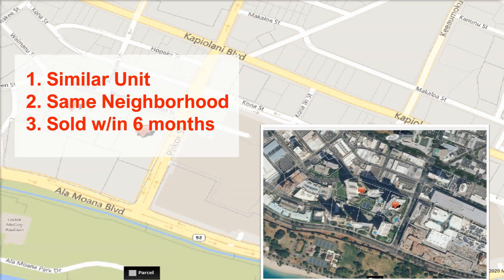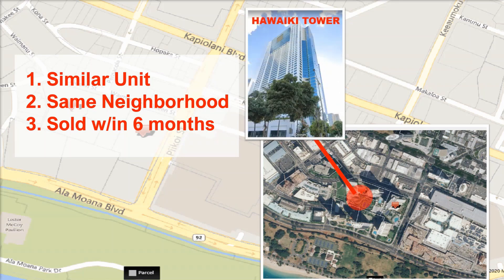To determine the price, we do a CMA — Comparative Market Analysis report — similar to how an appraiser would do an appraisal report. You look for a similar unit in the same neighborhood sold within the last six months.